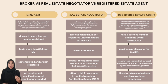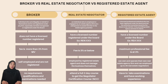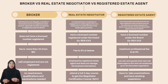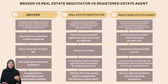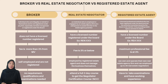Moving forward, a registered estate agent, or REA, is a licensed professional who has been registered under the board and has the Authority to Practice issued by the board under Section 16, providing estate agency services to clients. They also possess a license number with 'REA' in front of their ID, which solidifies their credibility and trustworthiness within the industry.